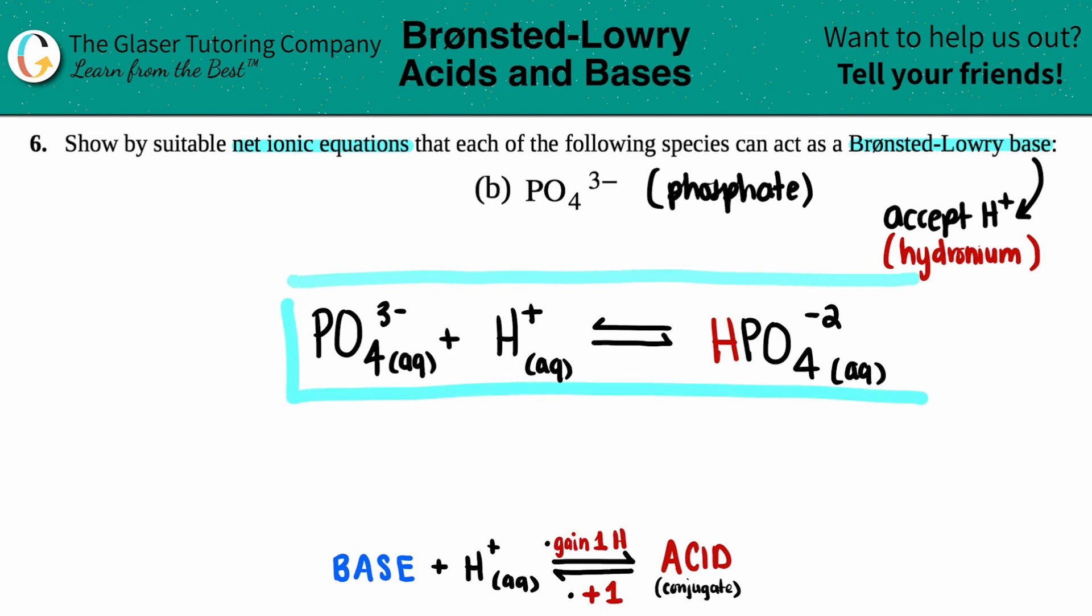That's your final answer. This is your net ionic equation showing that phosphate can act as a Bronsted-Lowry base.